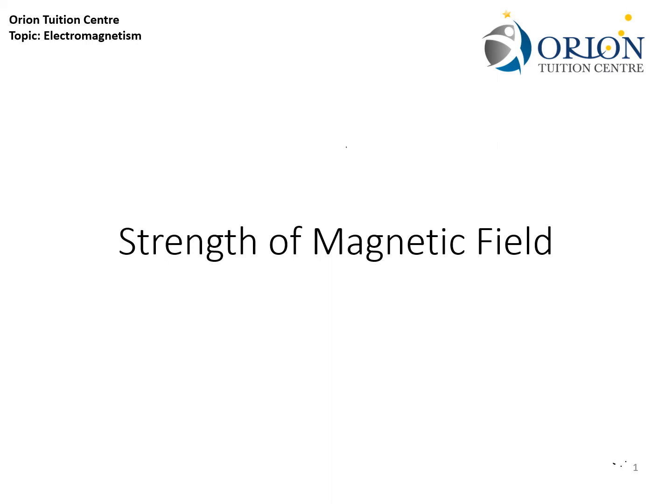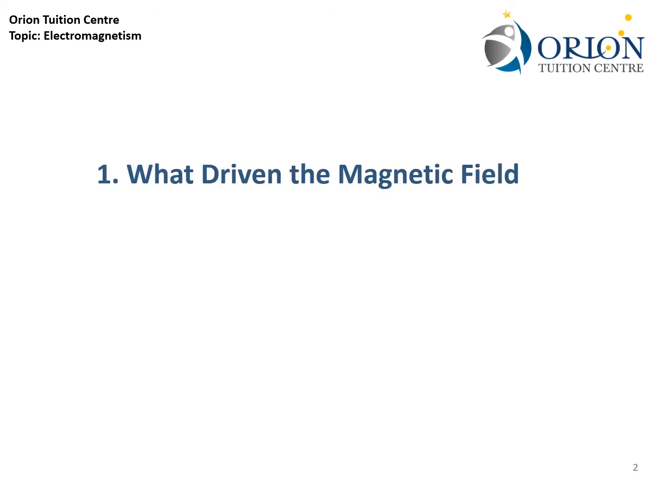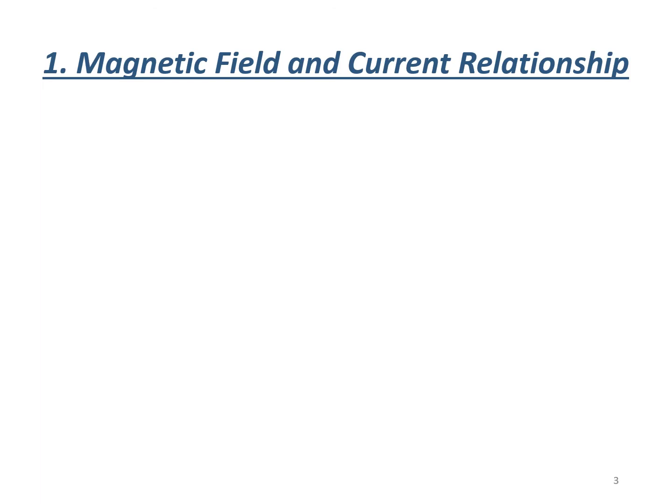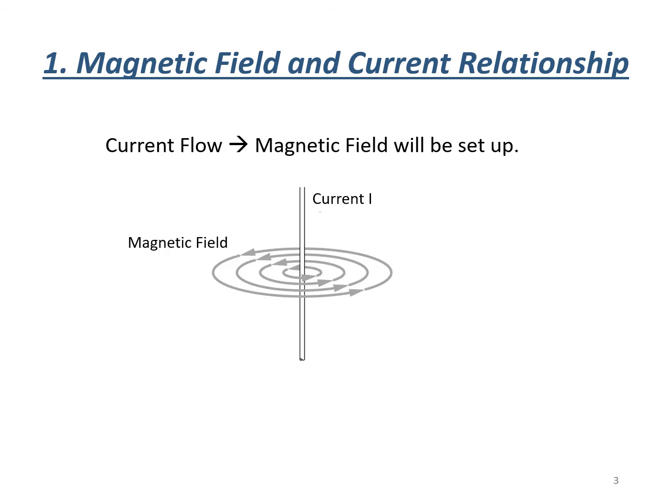In the next 10 minutes of the online lessons, we will discuss the strength of magnetic field. The three areas of focus at the fundamental level will be: firstly, what drives the magnetic field; how to determine its directions; and finally, to understand how the magnetic field adds up when there are more than one such magnetic field present. The magnetic field is driven by current flowing in the conductor — whenever there is a current flow, the magnetic field will set up around it.